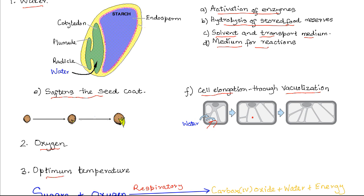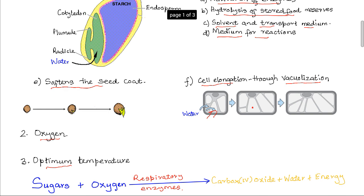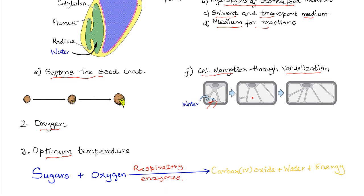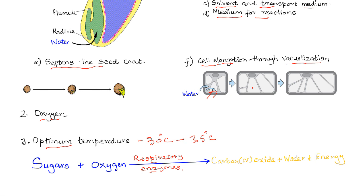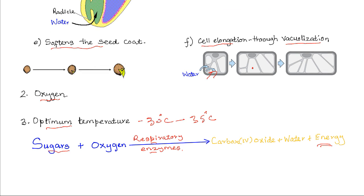Optimum temperature is another factor. Germination involves many reactions such as respiration and hydrolysis that are enzyme-controlled. The optimum temperature depends on the natural habitat of the plant; in most seeds it ranges between 30°C to 35°C, providing optimum conditions for respiratory enzymes that break down sugars to release energy. Very low temperatures inactivate the enzymes, while temperatures beyond the optimum denature them, so optimum temperature is very important for germination.